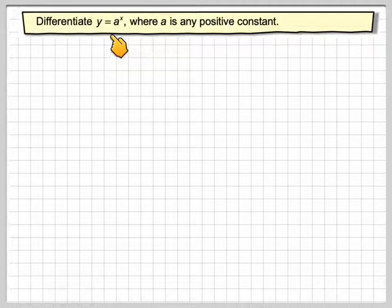In this video, we're going to differentiate y equals a to the x, where a is any positive constant. An example of this would be y equals 2 to the x, or y equals 3 to the x.